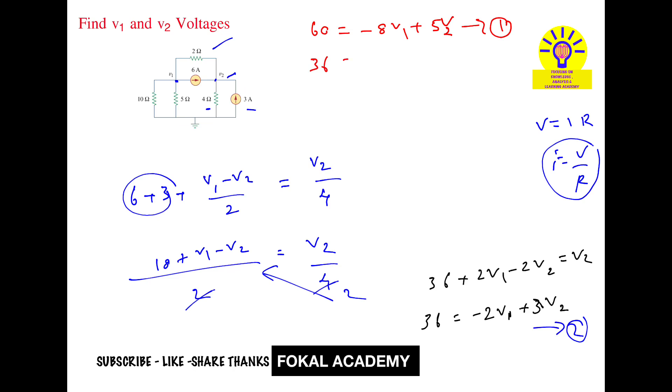Equation 2 is 36 equals minus 2v1 plus 3v2. By solving these two equations, we will get the v1 and v2 values.